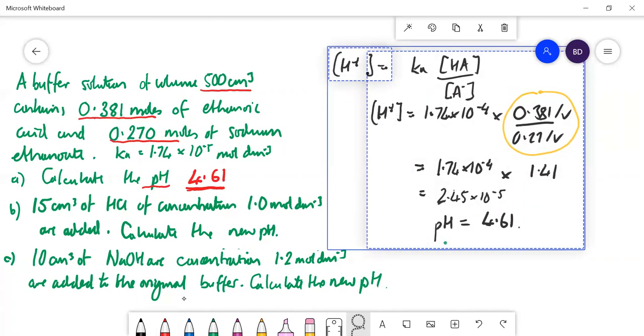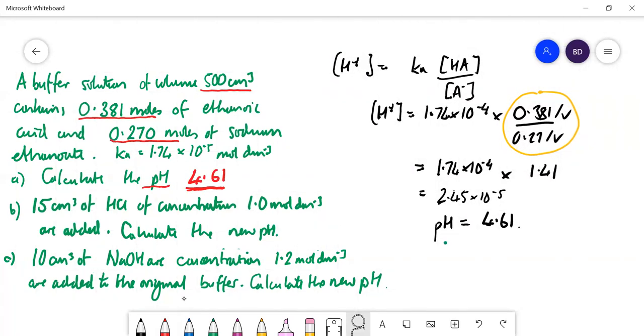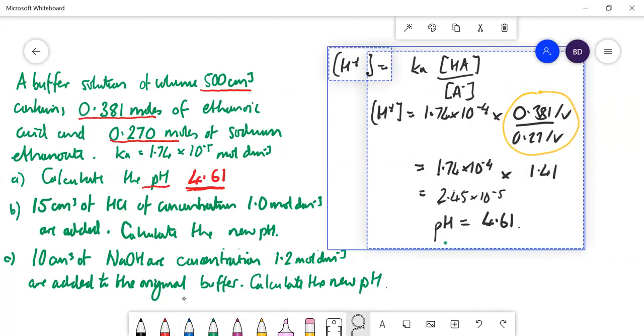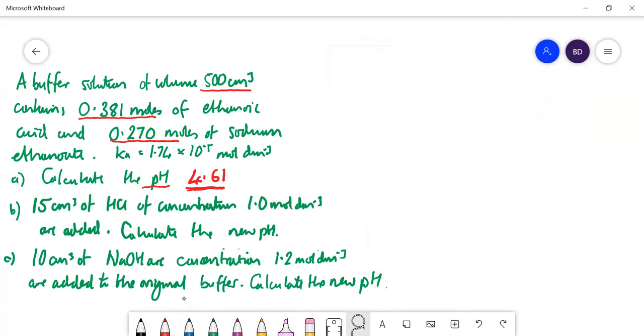We said before that if you add acid to a buffer, H+, you're going to get the H+ is going to react with the A- and it's going to turn it into HA. So we're going to do the start moles, final moles and final concentration.